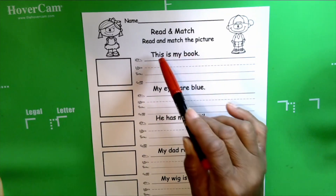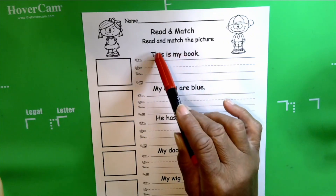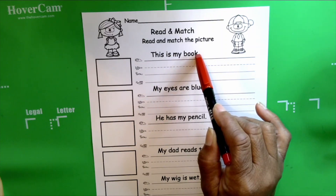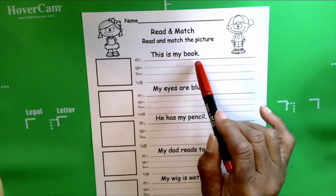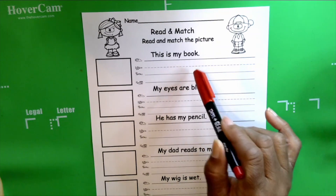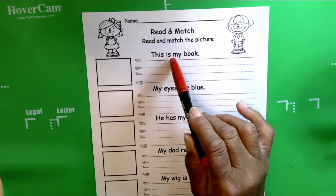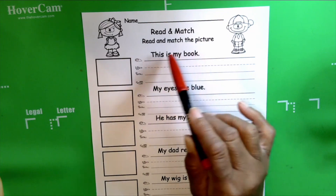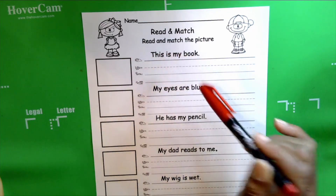Our first sentence is: this is my book. The sight words are 'this,' 'is,' and 'my.' Those three are sight words. The one we're featuring today is 'my.'